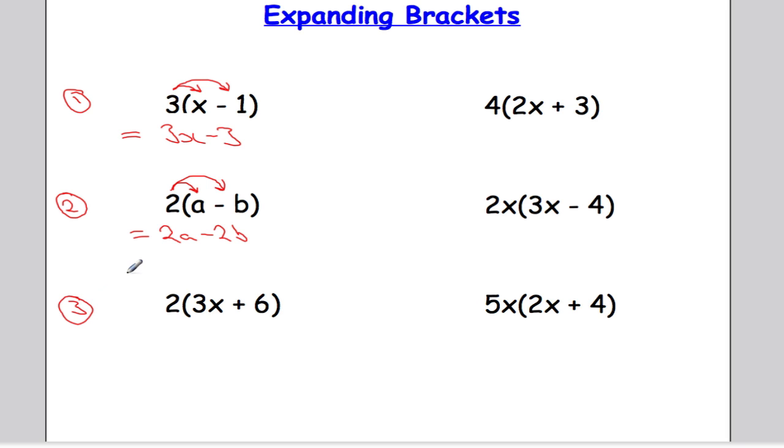Example 3. A little bit trickier now. We've got 2 times 3x plus 6. Following the exact same strategy as before, we take the 2 and multiply it by the 3x and then take the 2 and multiply it by the 6. So 2 times 3x, well 2 lots of 3x is 6x. 2 times 3 is 6 and then we still have the x. Then we've got 2 times 6 is plus 12. And that's question 3 done.